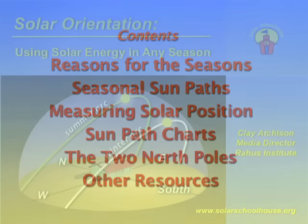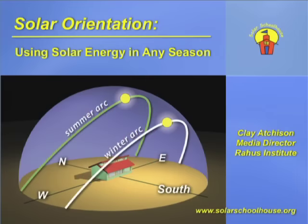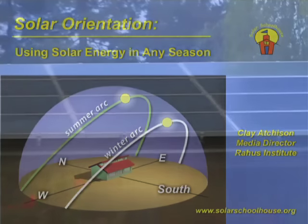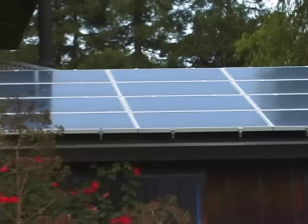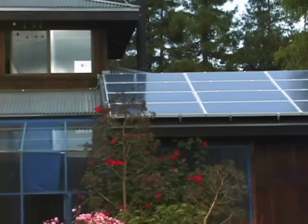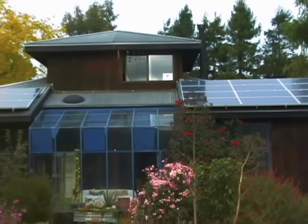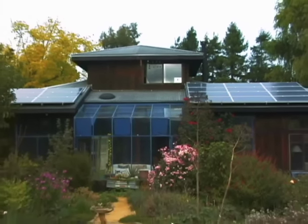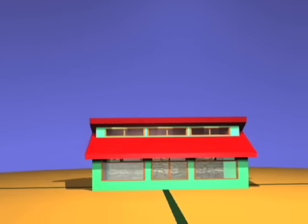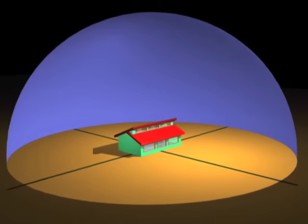Let's get started. Solar orientation is basically the process of aiming something at the sun. This is important because any solar technology, like a solar panel or a sun oven or even a passive solar home, receives the greatest amount of energy when pointed or oriented at a direct 90-degree angle toward the sun. This isn't as easy as you might think, however, because the sun's position in the sky is constantly moving.